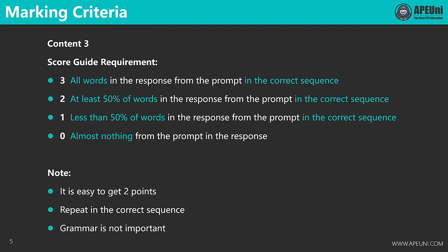Let's look at how content is scored. As described in Pearson's score guide, a perfect score of three requires repeating all words in the correct sequence, which is quite difficult. To get two points, you need to repeat at least 50% of the words in correct sequence. One point is for repeating less than 50%, and zero is for repeating almost nothing. PTE is quite lenient — if you repeat only half the sentence, you still get two out of three in content and are only missing one point.